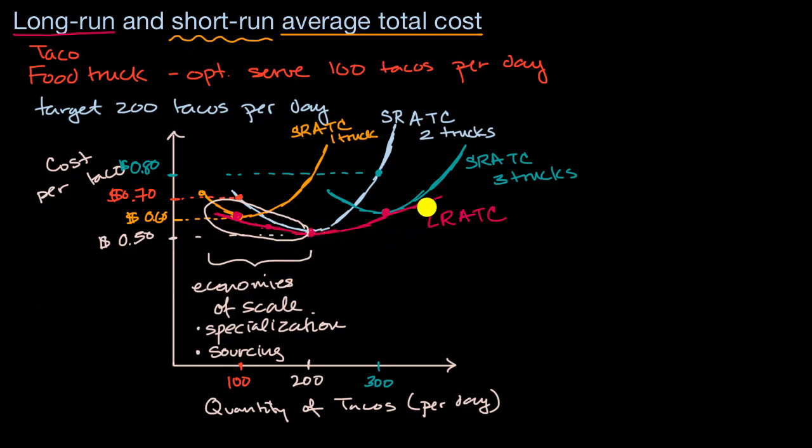Now, as we get past that point, we see that our long run average total cost curve, at least in this example, started to trend up. And so at this part of the curve, you could say that we are experiencing diseconomies of scale.